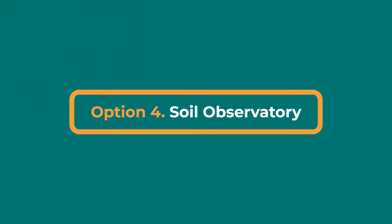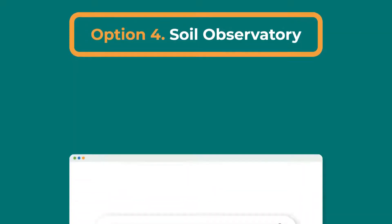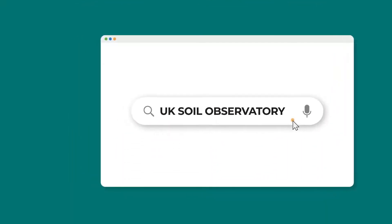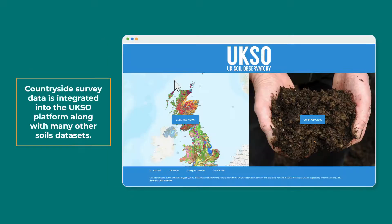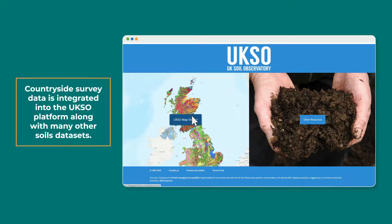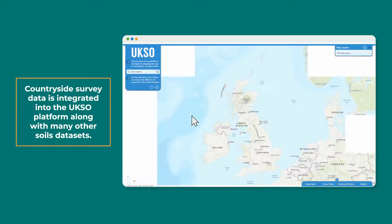Option 4: to see how GB soil properties vary by habitat at the GB level, see our data at the UK Soil Observatory website, hosted by the British Geological Society. Countryside Survey data is integrated into the UKSO platform along with many other soil datasets.